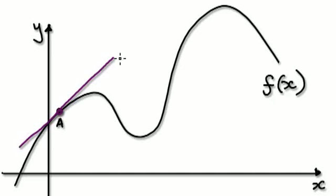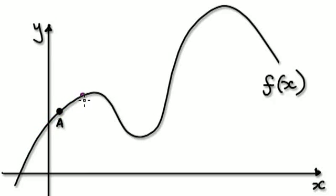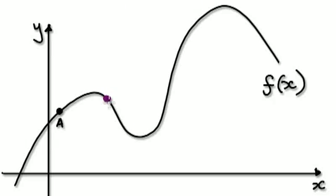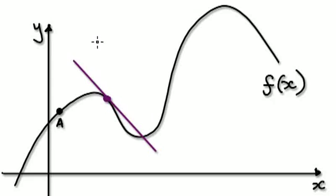The gradient at a is the gradient of this tangent line here. For example, if you want to find out the gradient at this point, then you draw a tangent line that just touches this point. And the gradient at this point is really the gradient of this tangent line. So here, the gradient at this point is really the gradient of this tangent line.